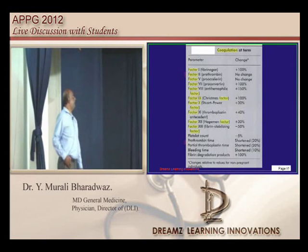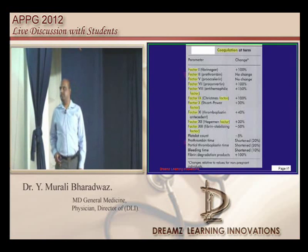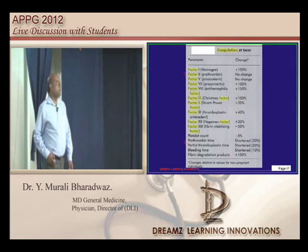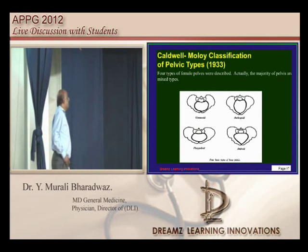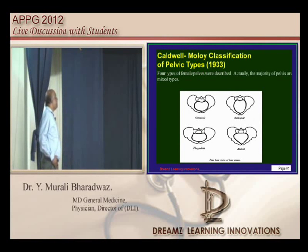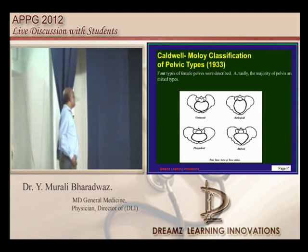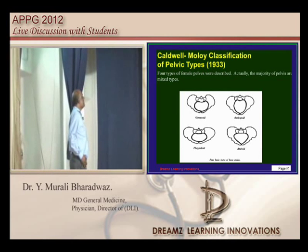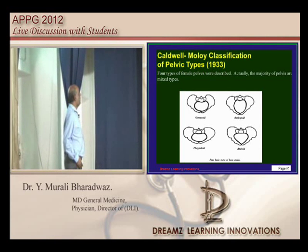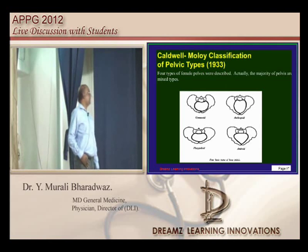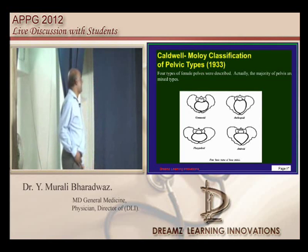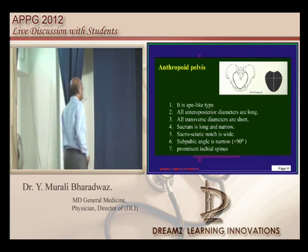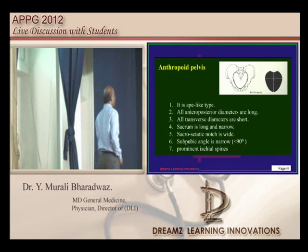Now, what is the type of pelvis? You all know the Caldwell-Molloy classification of pelvic types. The android type is the male type — it has projecting ischial spines and a very narrow sub-pubic angle, and that makes the android type the typical answer for this question.